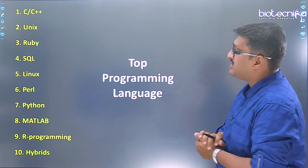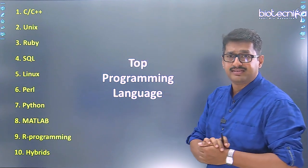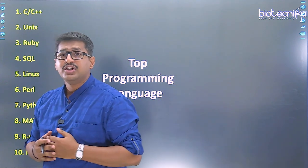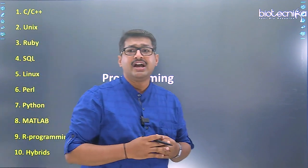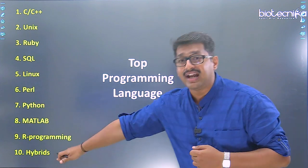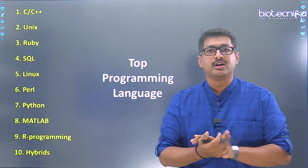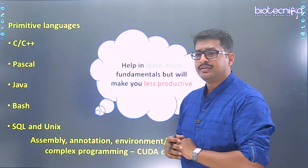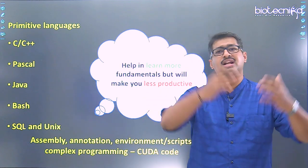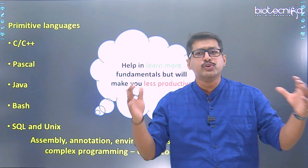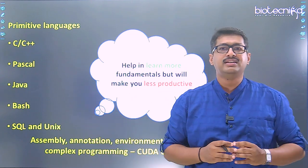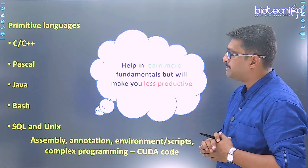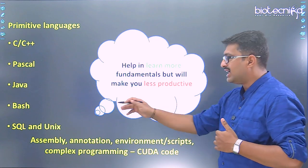The top 10 languages are: C, C++, Unix, Ruby, SQL, Perl, Python, MATLAB, R programming, and hybrid languages which we will talk about at the end. I thought of making clusters. There are a few primitive languages: C, C++, Pascal, Java, Bash, SQL, and Unix.